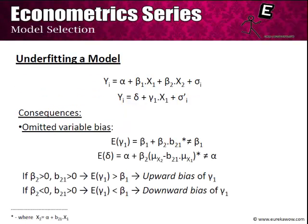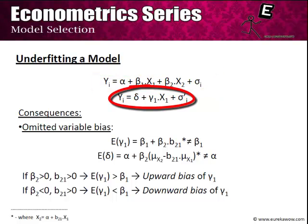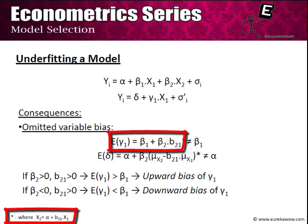Let us first talk about underfitting. We commit underfitting if the original population model was yi = alpha + beta1*x1 + beta2*x2 + sigma_i, but we omit x2 and actually run yi = delta + gamma1*x1 + sigma_i_dash. Note that this is the only case of violation of the Gauss-Markov assumptions that produces a bias in the OLS estimate. When we run this model, we obtain an estimate of gamma1. However, the expected value of gamma1 will not equal beta1, but will equal beta1 + beta2 * b21, where b21 is the slope coefficient of a regression of x2 as a function of x1.